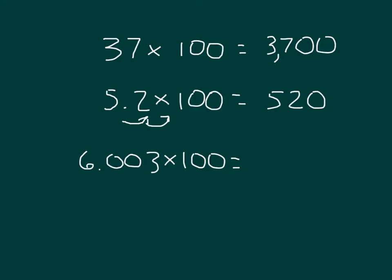And for this last one, 6.003, or 6 and 3 thousandths times 100. We have 6 and 3 thousandths times 100, where we get 600.3.